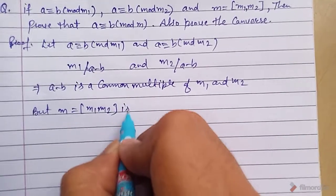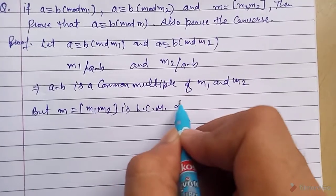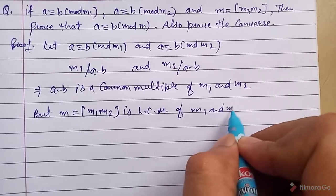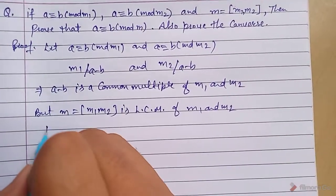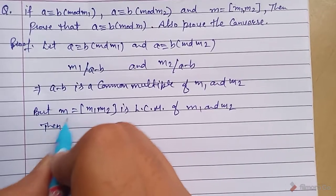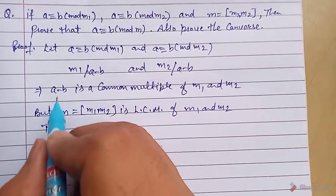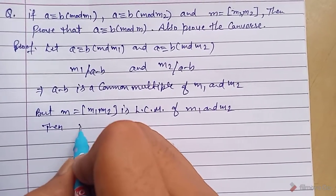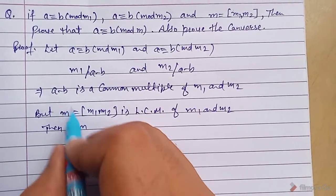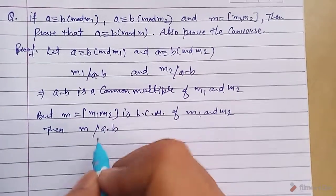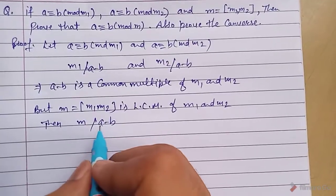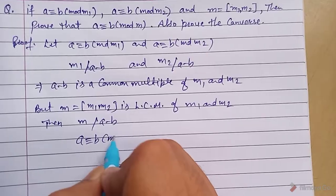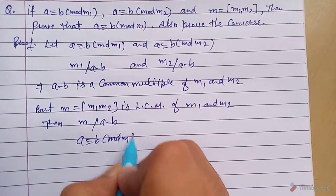Since m = LCM(m1, m2), m is the least common multiple of m1 and m2. Since (a − b) is a common multiple of m1 and m2, m also divides (a − b), because m is the least common multiple. From the definition of congruence, we can write a ≡ b (mod m).